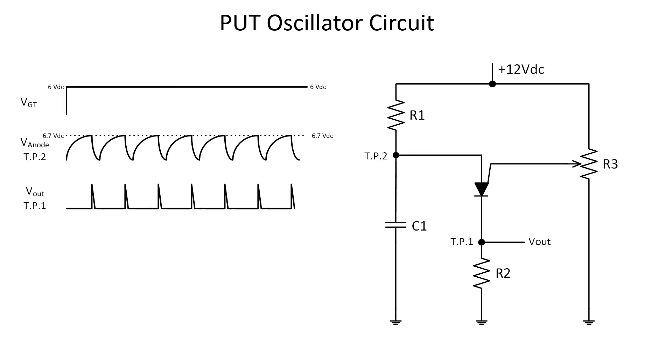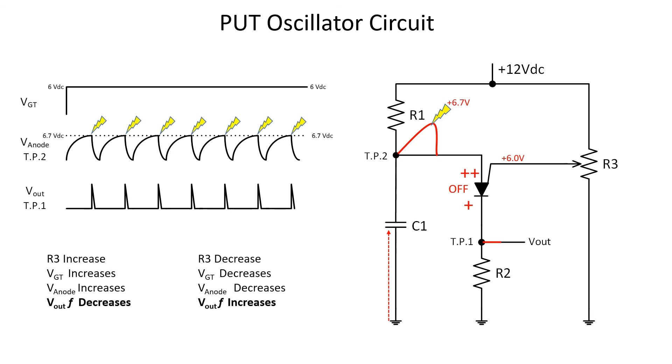As soon as DC is applied, the PUT will be forward biased anode to cathode. But that's only one requirement, so it's currently not conducting. No current flowing through R2 means the Vout is going to be low. R3's voltage drop develops the gate voltage, in this case, positive 6 volts. C1 is going to start charging at this point. Can you guess what it needs to charge to? If you said 6.7 volts, you are correct. We need to be 0.7 volts greater on the anode, and as soon as this happens, the PUT turns on.